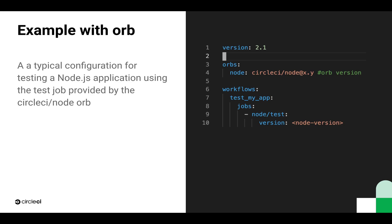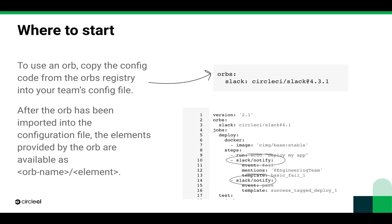So let's dig a little bit in on how we do this. To use an orb, copy the config code from the orbs registry into your config file. After the orb has been imported into the configuration file, the elements provided by the orb are available as orb name slash element. In this case, we can see that the Slack elements are available by using slack slash notify. In our previous example, they were available with node slash test. The available elements and usage examples will all be in the orb registry.